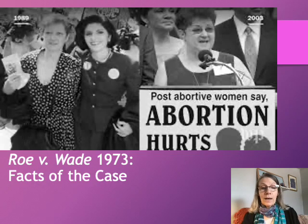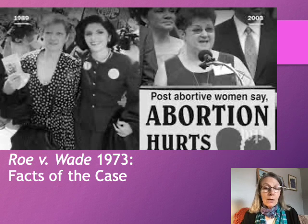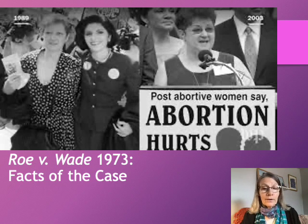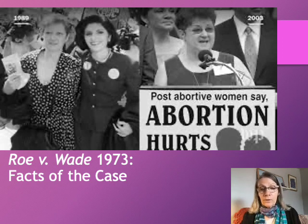Roe v. Wade is a pretty straightforward case. It's about Norma McCorvey, who in 1969 became pregnant with her third child and did not want to have that child. She was poor, worked at a carnival, and sought an abortion. She told the doctor she had been raped, hoping for sympathy, but Texas law forbade abortion unless it would save the life of the woman. The doctor refused and gave her the name of an adoption lawyer, who then connected her to the two attorneys that ultimately represented her before the Supreme Court: Linda Coffey and Sarah Weddington.